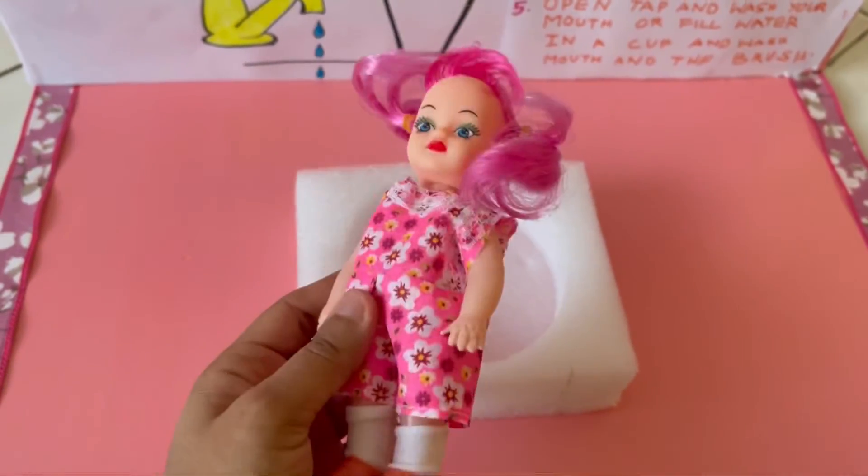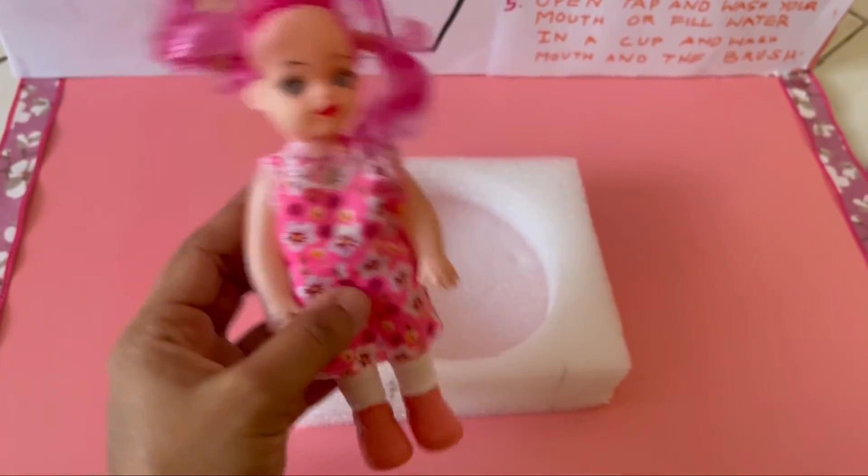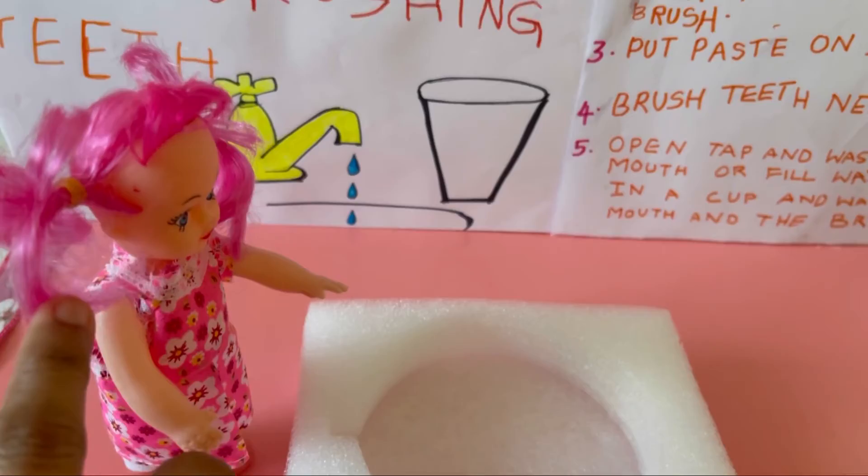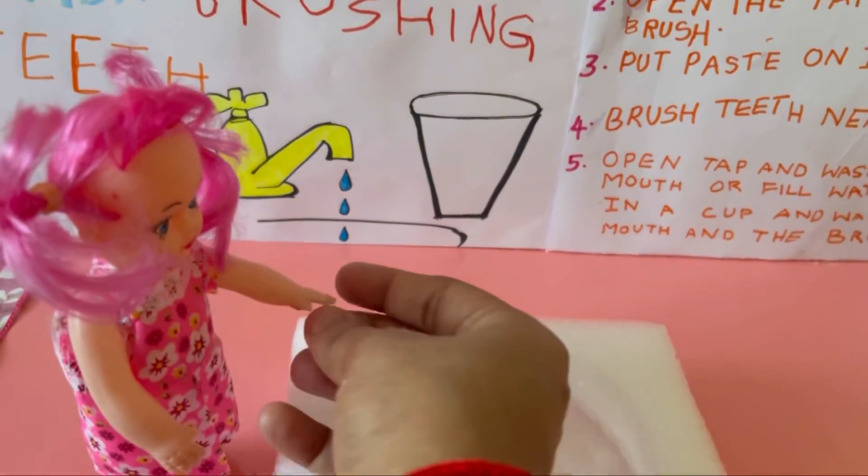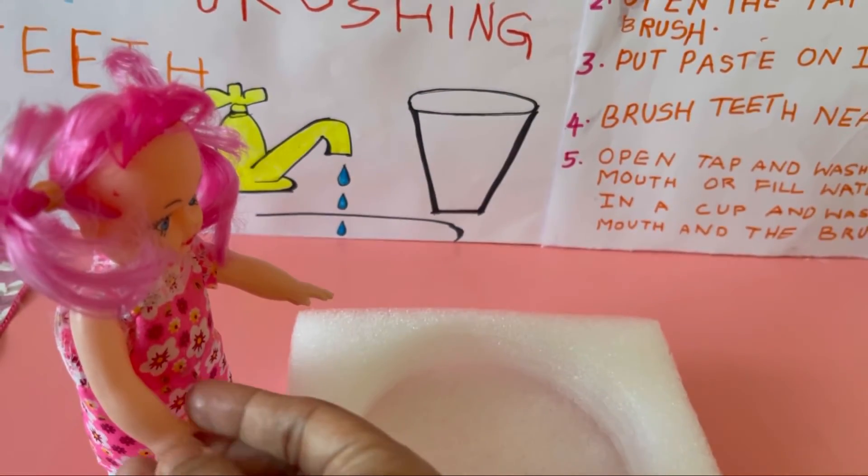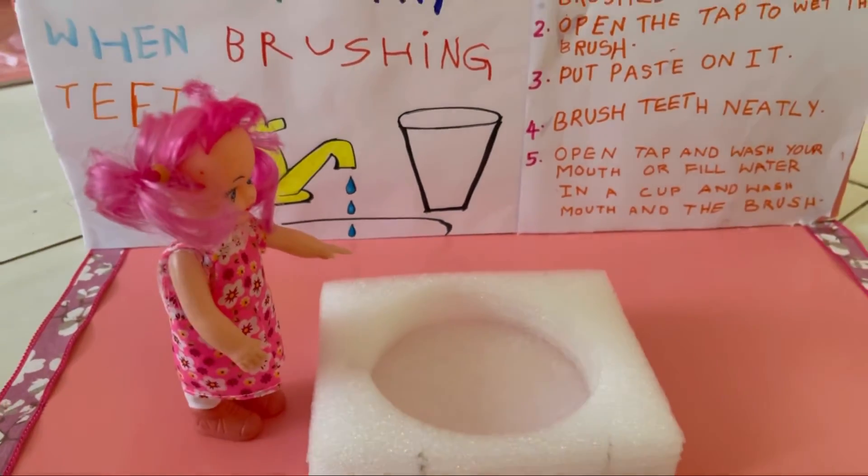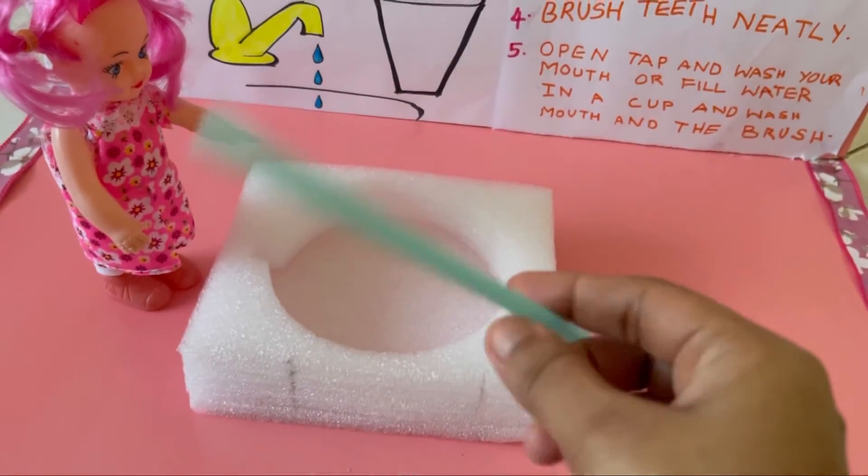And now let's take this small plastic doll and stick it as if a girl is standing and brushing her teeth. And now we have to make the tap, brush, and the paste. Let's see how to make.